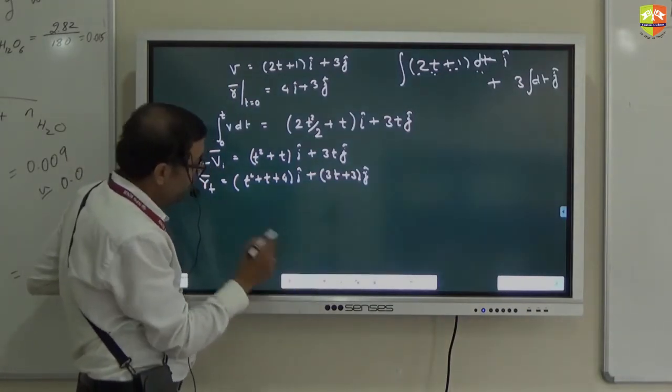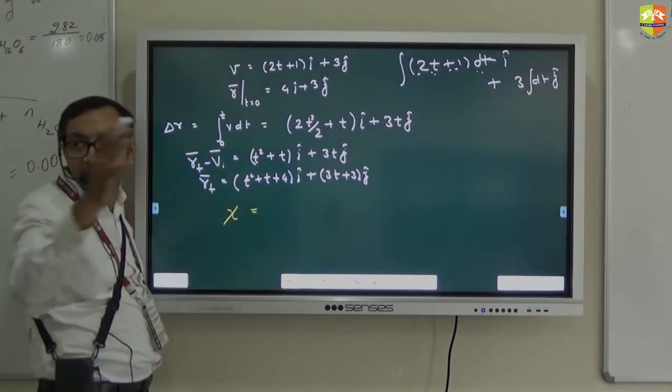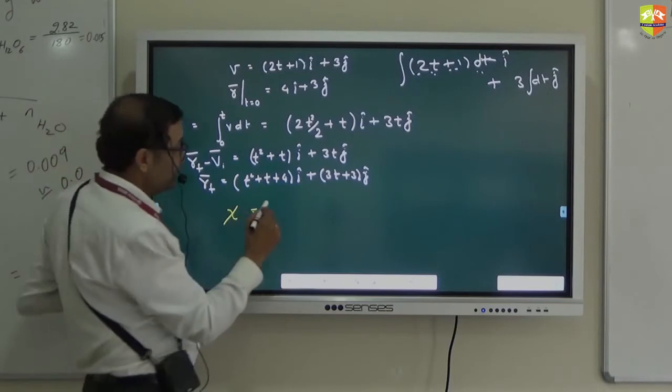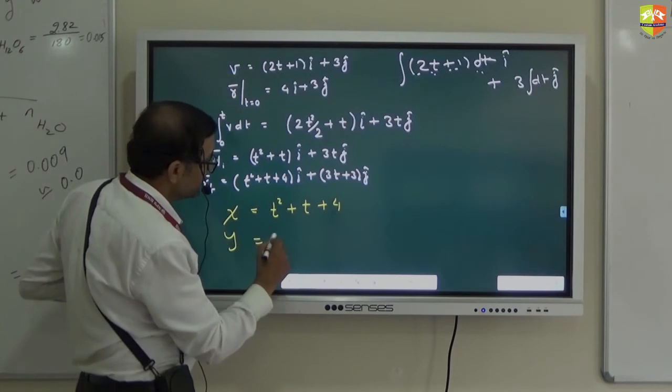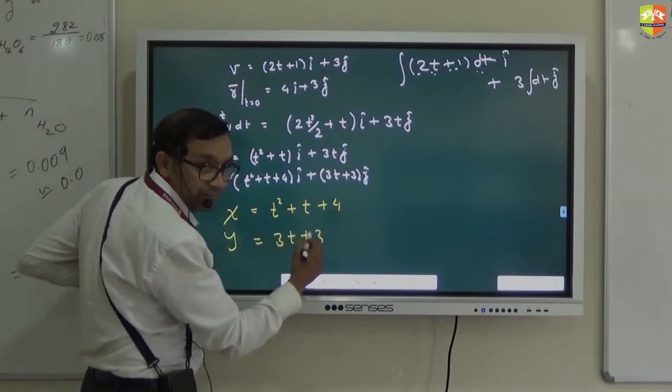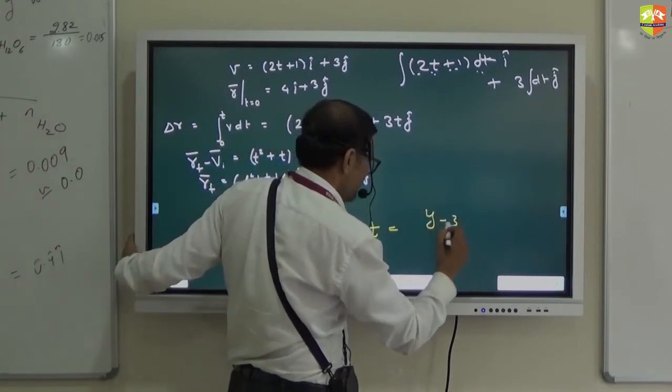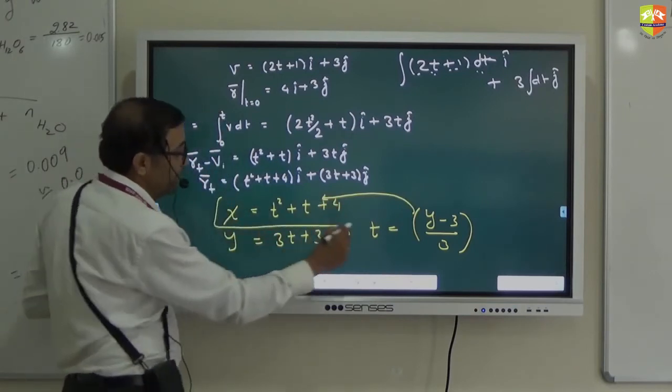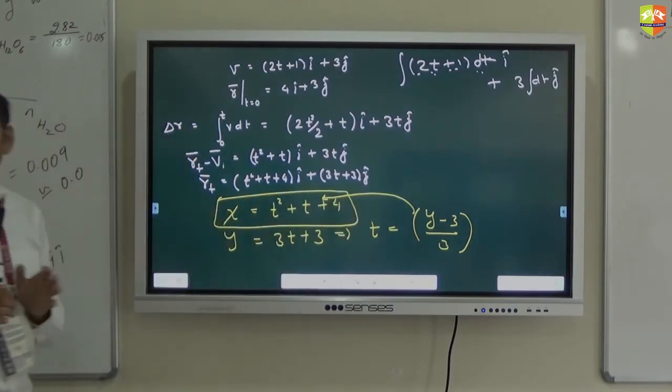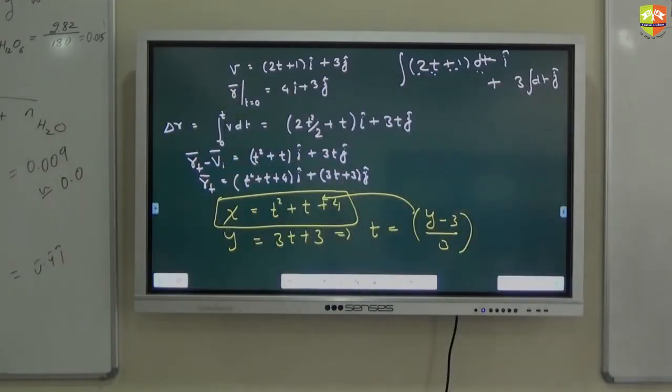So this is the final position vector right. So x coordinate, do you remember how we write position vector? x coordinate i here plus y coordinate j here right. So x is t square plus t plus 4 and y is 3t plus 3 right. So from here you get the value of t as y minus 3 by 3. Substitute this value of t over here you get a relation between x and y. That is the equation of the path.